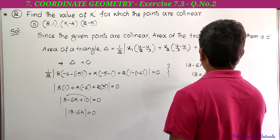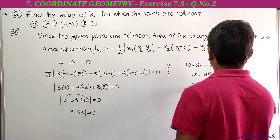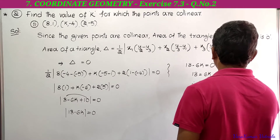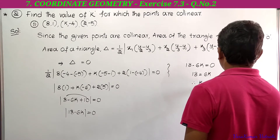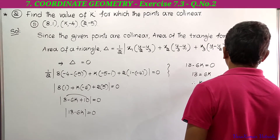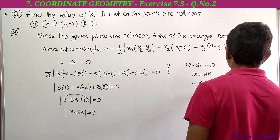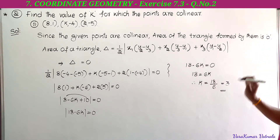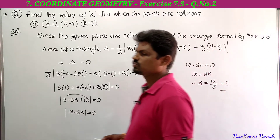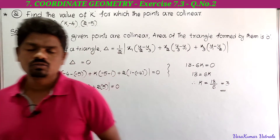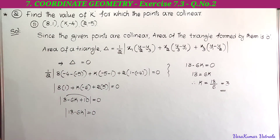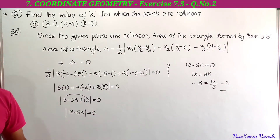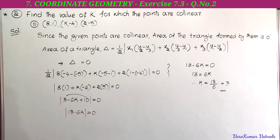We need to find the value of k. Therefore k = 18/6. Cancelling by 6, we get k = 3. This is the second bit in the second problem. This type of problem is very important for 2 marks. Next we have to solve the third bit.